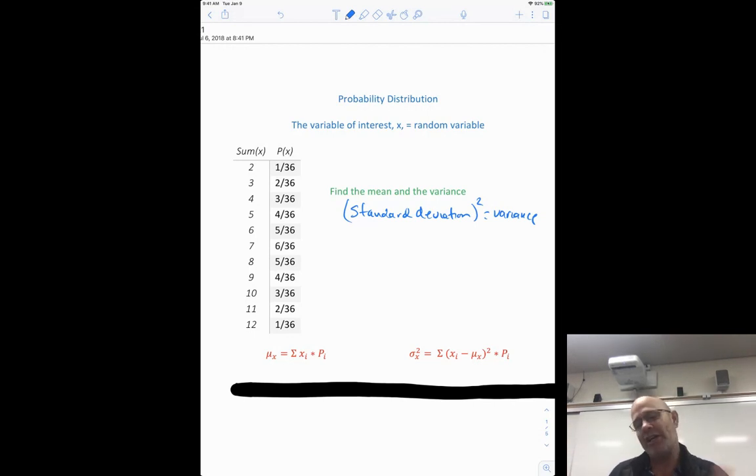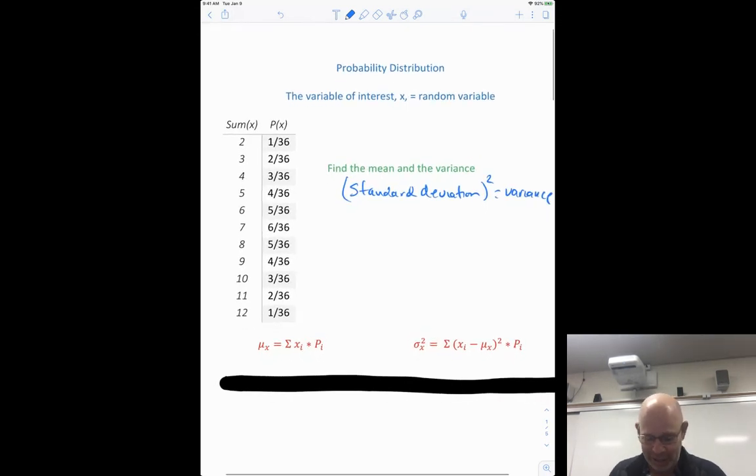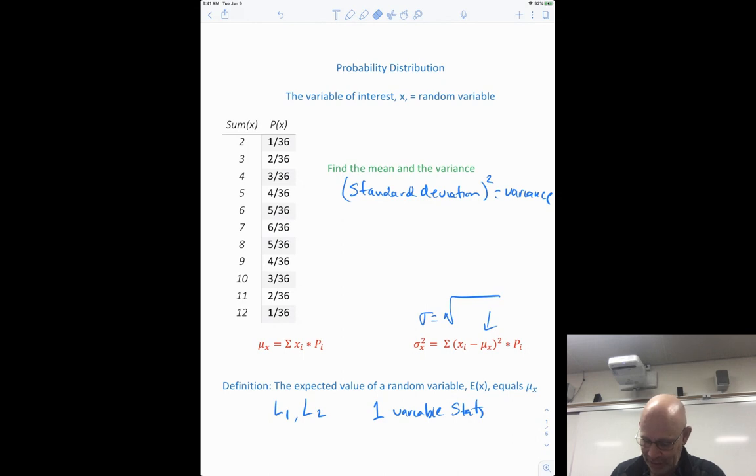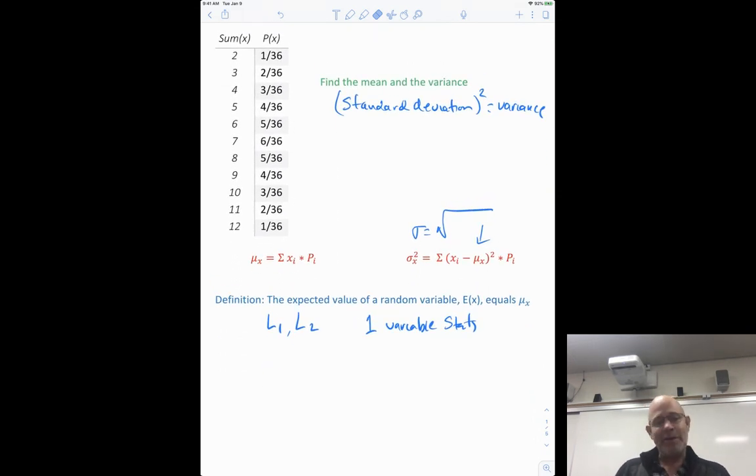So we need that variance. These are the same formulas I gave you way back in the beginning. First formula here is the mean is equal to the sum of all the numbers times the probability. So you just do 2 times 1/36, 3 times 2/36, 4 times 3/36, add them all up. And then the variance now, so I'm taking the square root off this. If I went to this, it would be square root of that. So you take each one of the data points, subtract the mean, square it, multiply it by its probability. We're not going to have to do this math because our calculator is going to do it for us. Just remember list 1, list 2. So it's one variable stats in the calculator.